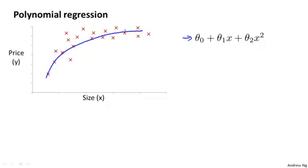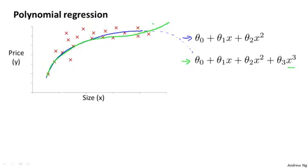But then you might decide that your quadratic model doesn't make sense, because of a quadratic function, eventually this function comes back down. And we don't think housing prices should go down when the size goes up too high. So then maybe we might choose a different polynomial model and choose to use instead a cubic function. And where we have now a third order term and we fit that, maybe we would get this sort of model. And maybe the green line is a somewhat better fit to the data, because it doesn't eventually come back down.